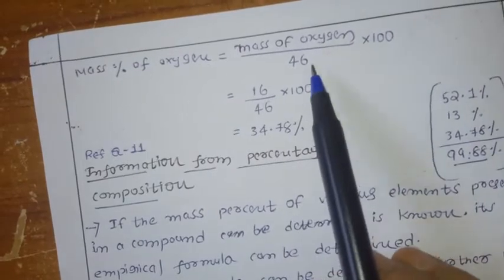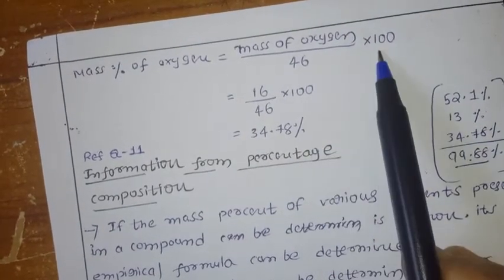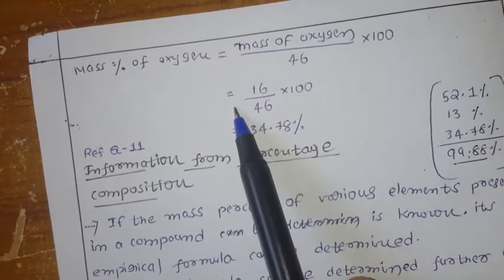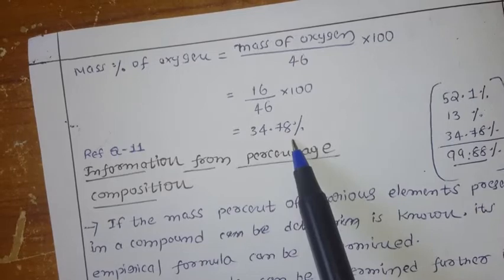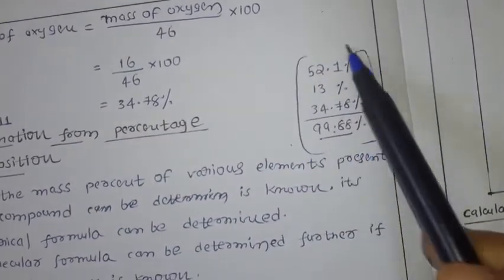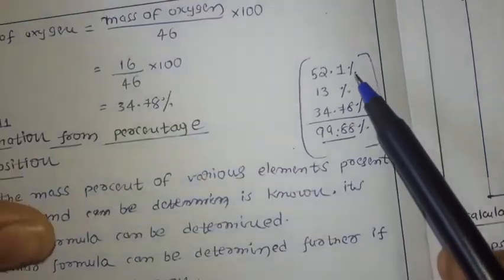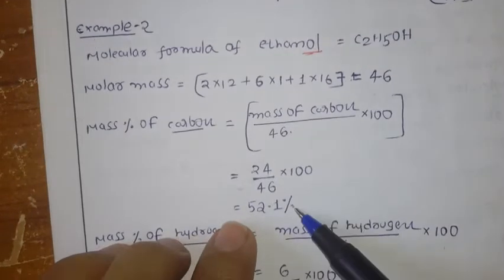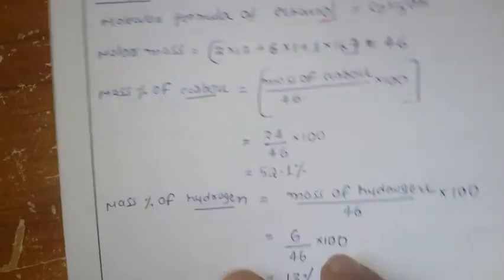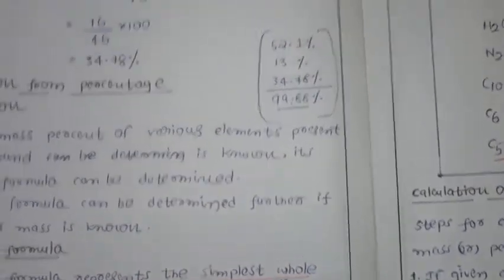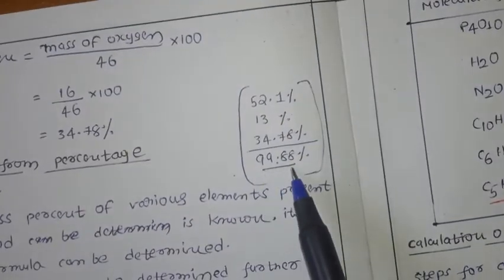Next we have oxygen. The mass percentage of oxygen: mass of oxygen divided by 46 (the molar mass of ethanol) into 100. So 16 by 46 into 100 = 34.78%. Now if you see the total: carbon is 52.1%, hydrogen is 13%, and oxygen is 34.78%. Adding all together we get approximately 99.88%, which we can consider as 100%.